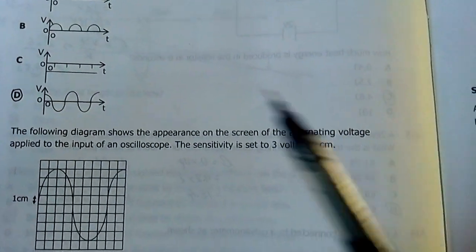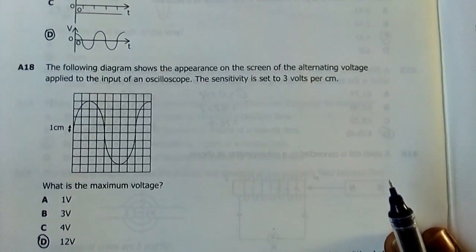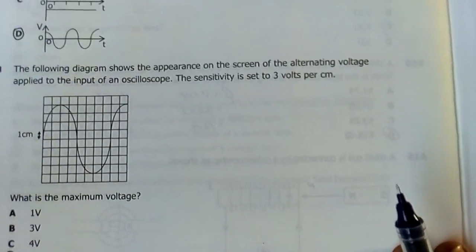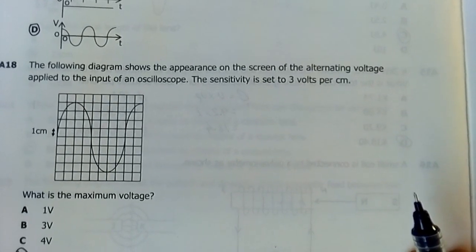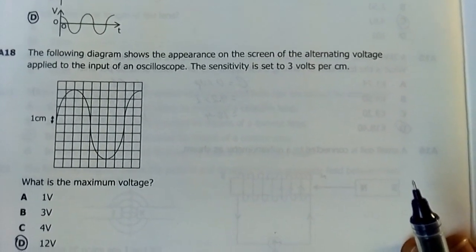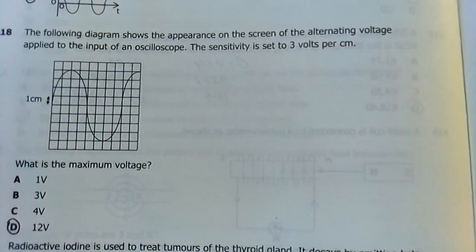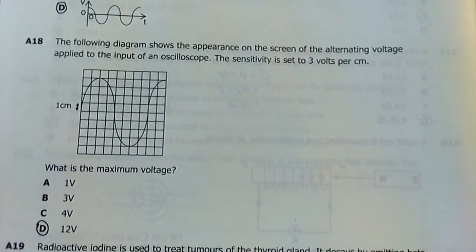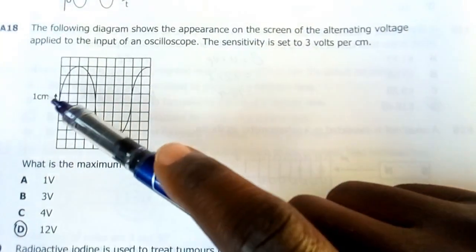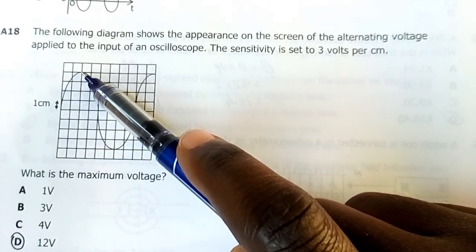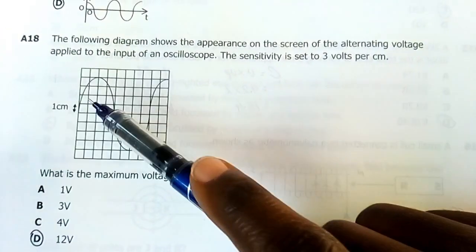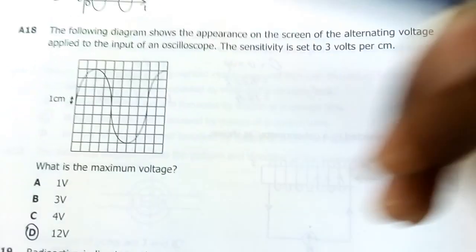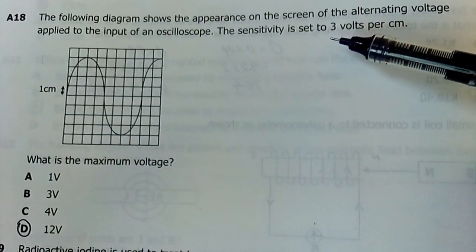Number 18: The following diagram shows the appearance of the screen of an oscilloscope with an alternating voltage applied to the input. The CRO sensitivity is set to three volts per centimeter. What is the maximum voltage? The maximum voltage is 12. If the sensitivity is set to three volts per centimeter, you look at the distances. You have been told one box is one centimeter. From this mean here you have one, two, three, four boxes and each box is three volts, so three times four will give you 12 volts. That's your peak voltage.